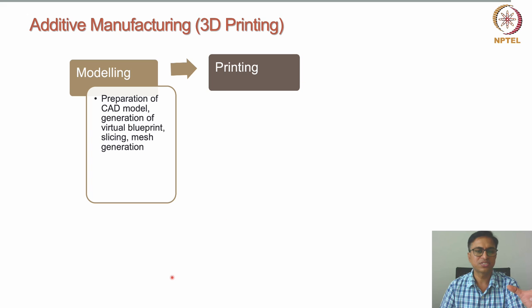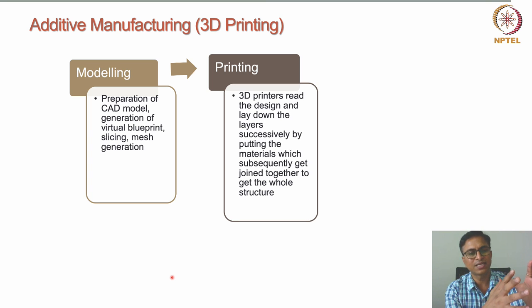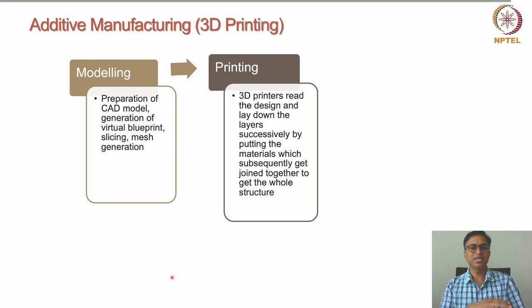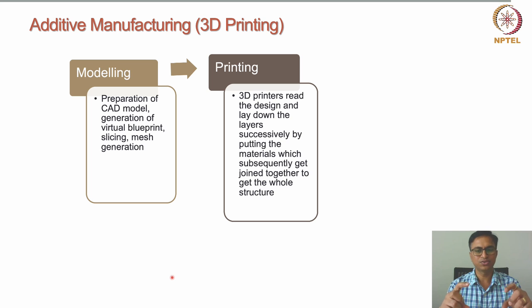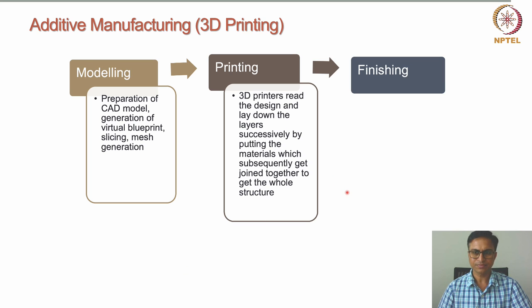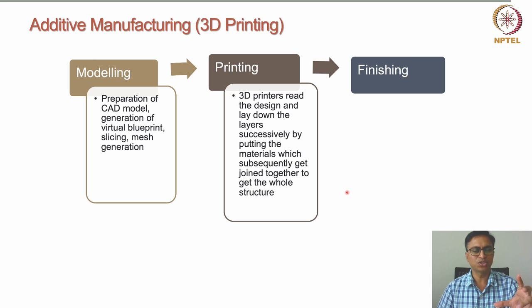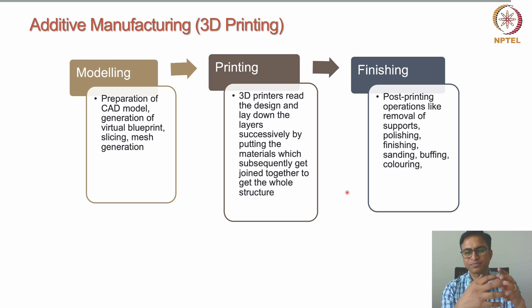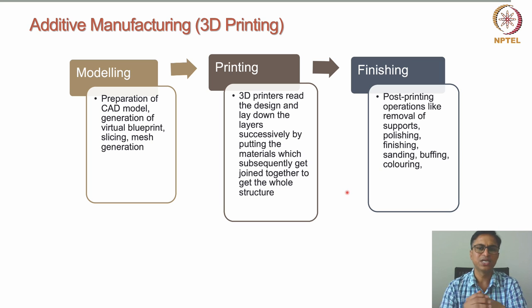In the actual printing step, the 3D printer reads the CAD design and lays down materials in a layer-by-layer fashion successively, with layers joining each other to generate the whole 3D structure. The next step is finishing, since the object produced by the 3D printer is usually not immediately ready for use or for market. Finishing operations — such as removal of support structures, polishing, sanding, buffing, and coloring — are performed to improve the appearance of the 3D printed structure and enhance user experience.